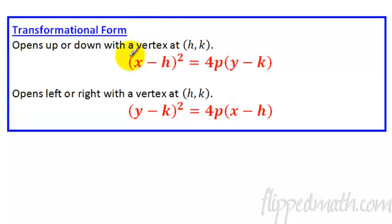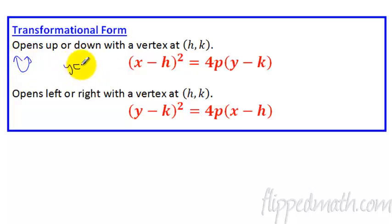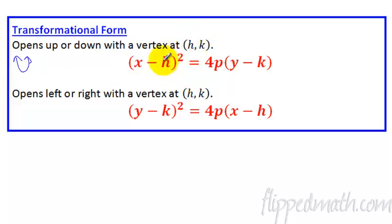Now onto transformational form - and this form you really need to be good at. Notice we have the quantity squared here by itself. This is if the parabola opens up or down - that's what we're used to. We'd have y equals x squared, so x being squared is not a big deal. When the x is squared, it opens up or down. And you have the vertex at h and k just like before.